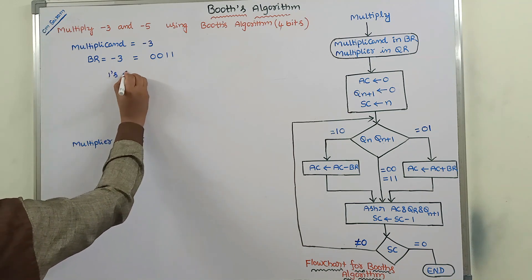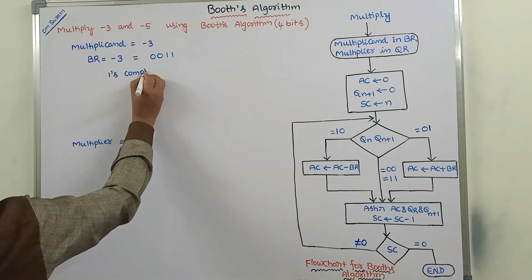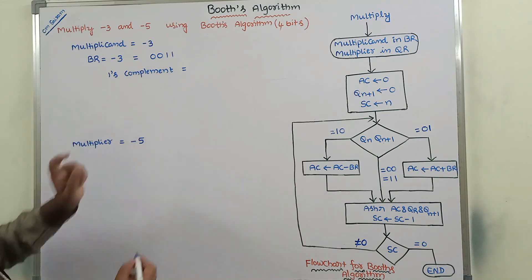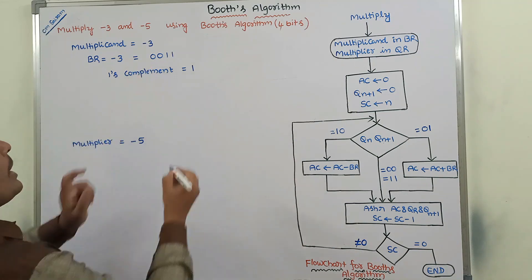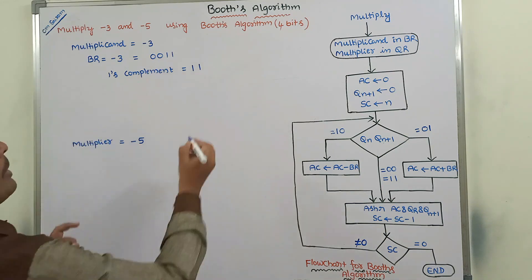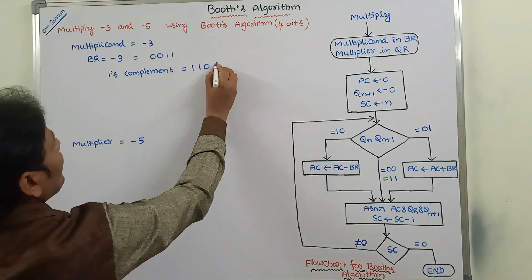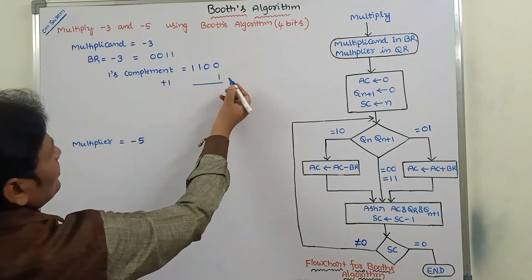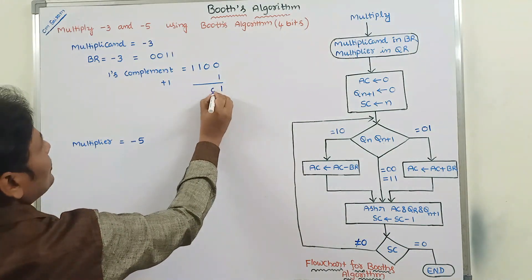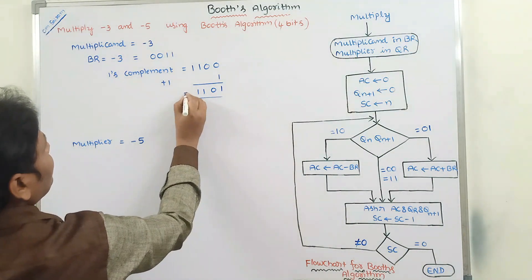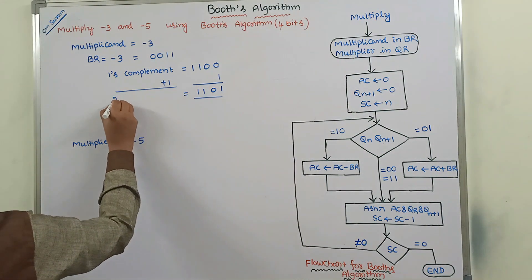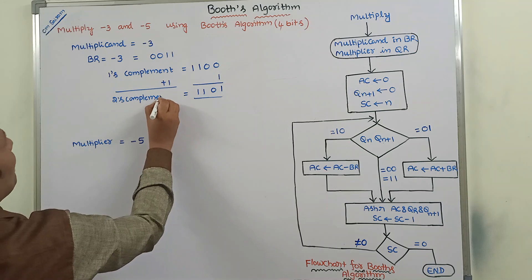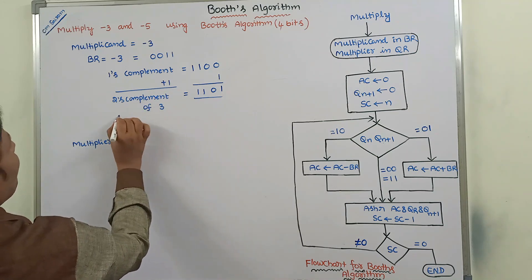We have to find the 1's complement of 0011. So 0 is complemented as 1, 0 is complemented as 1, 1 is complemented as 0, 1 is complemented as 0. Next, we add plus 1 at the LSB side, giving us 1101. This is the 2's complement of 3, which represents the value minus 3.